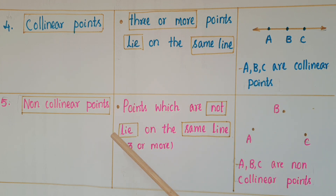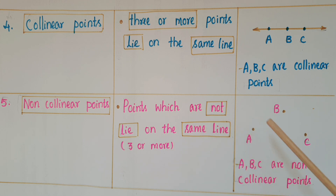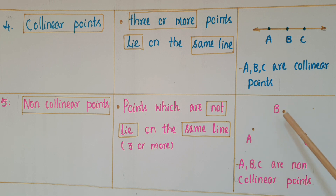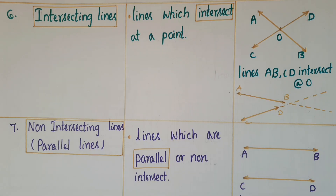Next one is non-collinear points. Points which do not lie on the same line are called non-collinear points. If you observe points A, B, C here, these are not on the same line, so these are called non-collinear points.